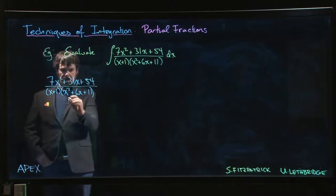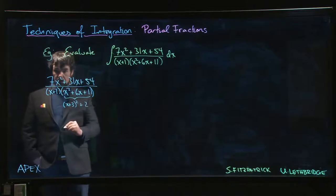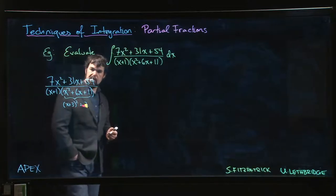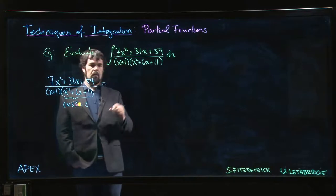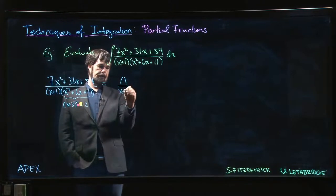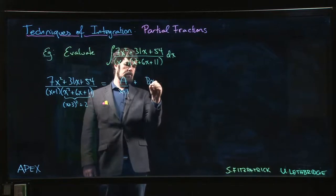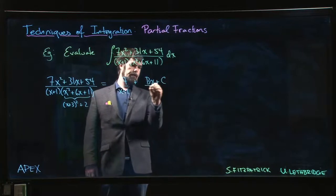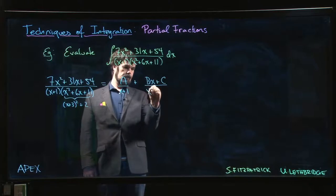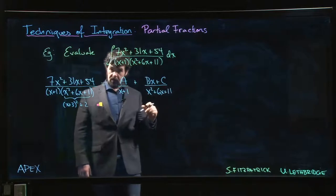This is an irreducible quadratic. We might notice even off the hop this is x plus 3 squared plus 2. So we expect something that looks like A over x plus 1 and then Bx plus C over x squared plus 6x plus 11.